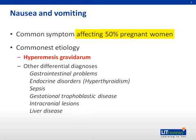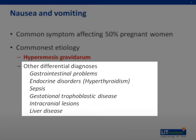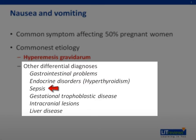Up to 50% of all pregnant women will experience symptoms of nausea and vomiting in early pregnancy. The commonest etiology is hyperemesis gravidarum. However, other differential diagnoses need to be considered and excluded. These include gastrointestinal disease, endocrine disorders such as hyperthyroidism, sepsis, gestational trophoblastic disease as previously mentioned, and even intracranial lesions.